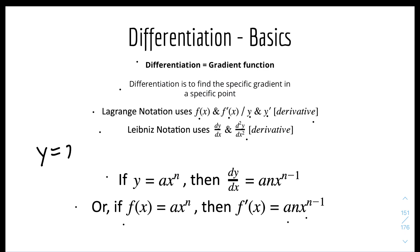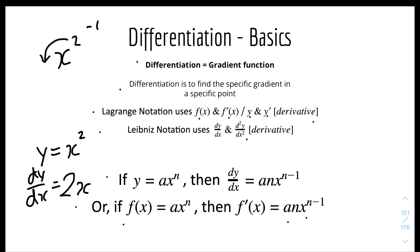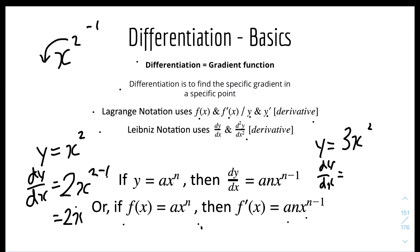If y equals x squared, dy over dx is found by pulling the power down: the 2 comes down to give 2x, and the power minus 1 gives x to the power of 1, so just 2x. For another example, if y equals 3x squared, dy over dx — you pull the power down and multiply by the coefficient: 2 times 3 equals 6, so the answer is 6x.